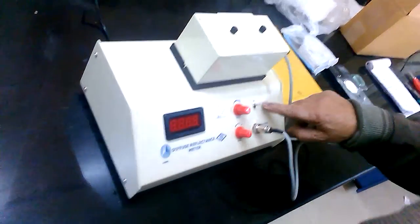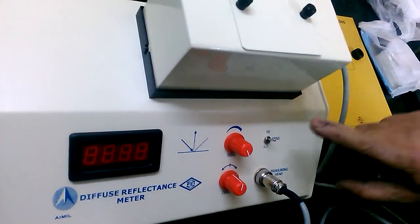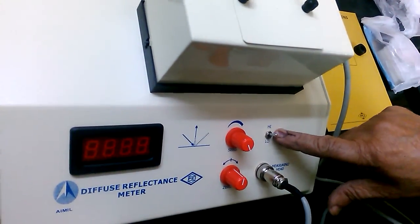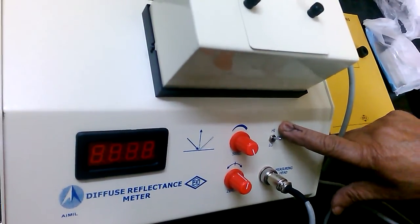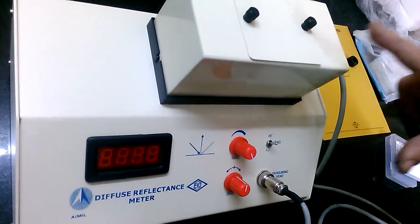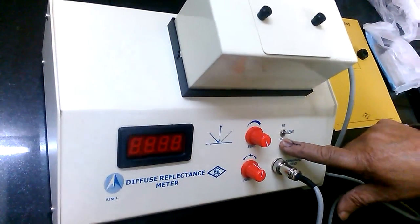This is the high and low switch. In case you are measuring reflectance with the green filter, the position of the switch at high. And if you change the filter blue, then put the position of the switch at low.